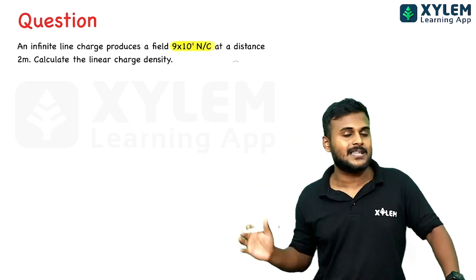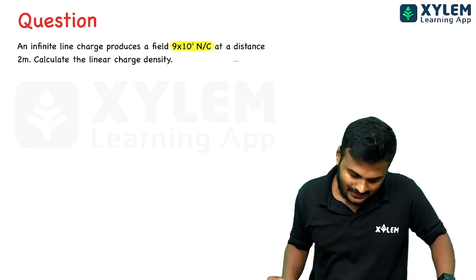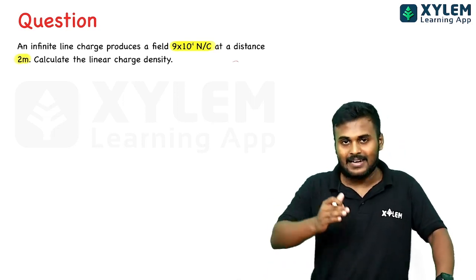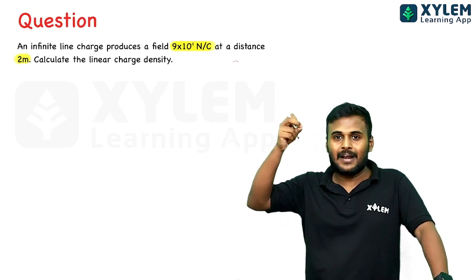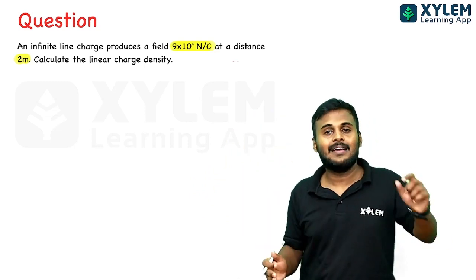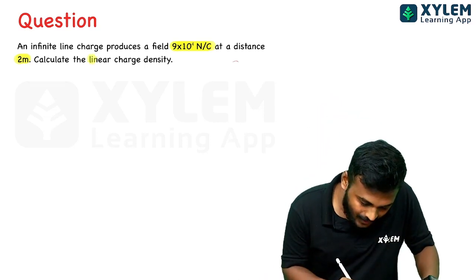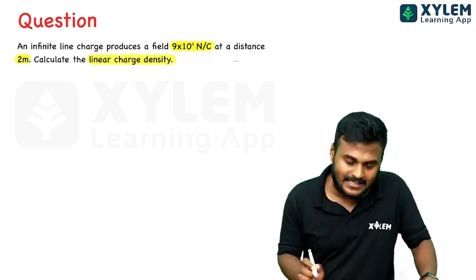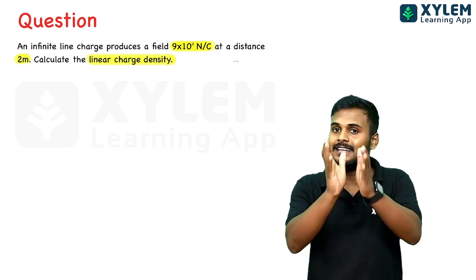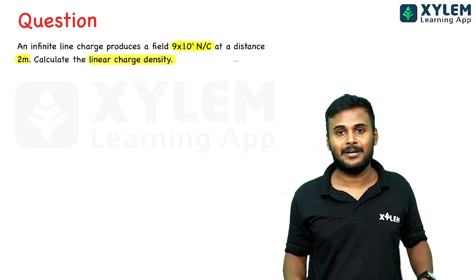Question 4: An infinite charged wire produces an electric field intensity at a distance of 2 meters. What is the linear charge density? The electric field due to an infinitely long charged wire is E = λ / 2πrε₀, where λ is linear charge density and r is the distance.